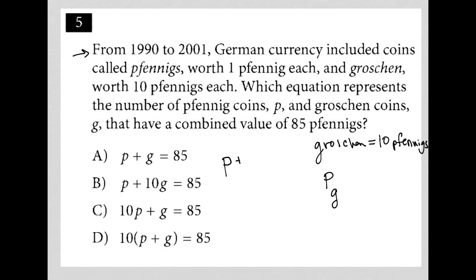And I'm going to add to that some number of groschen coins, and the value altogether should be equal to 85 pfennigs. So what's wrong with this? It really is units. The unit here is pfennigs. The unit here is pfennigs. But the unit here is groschen.